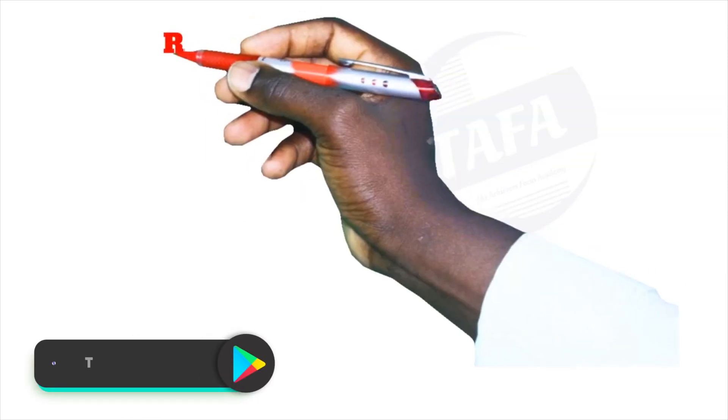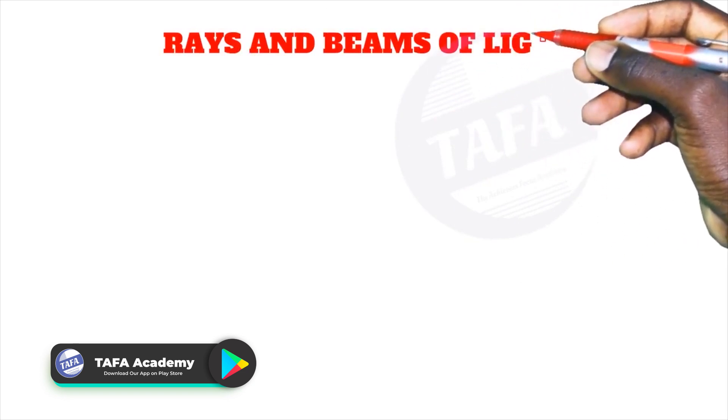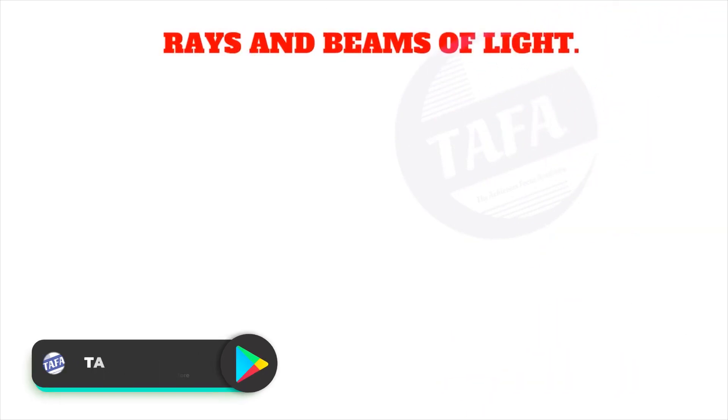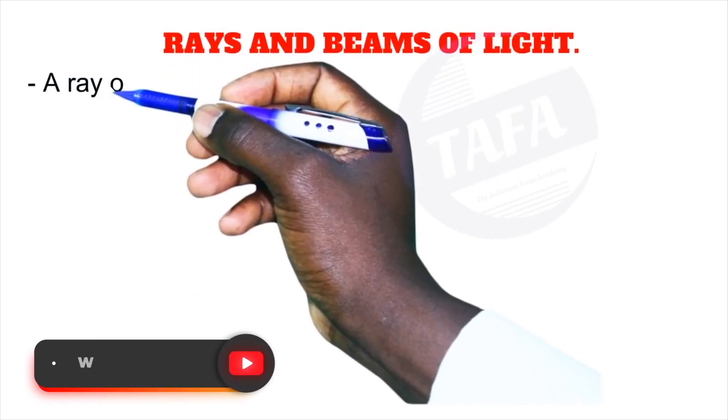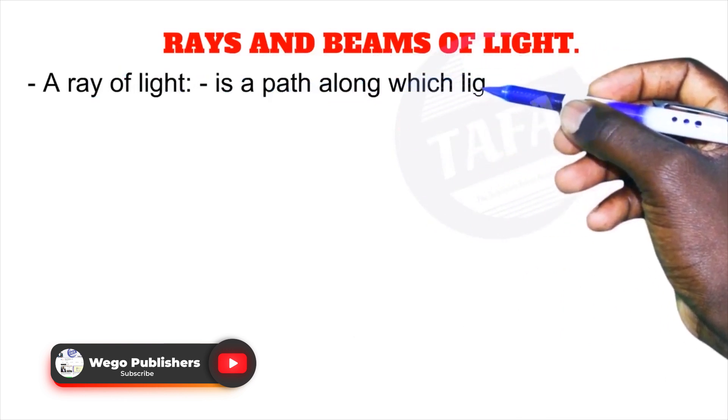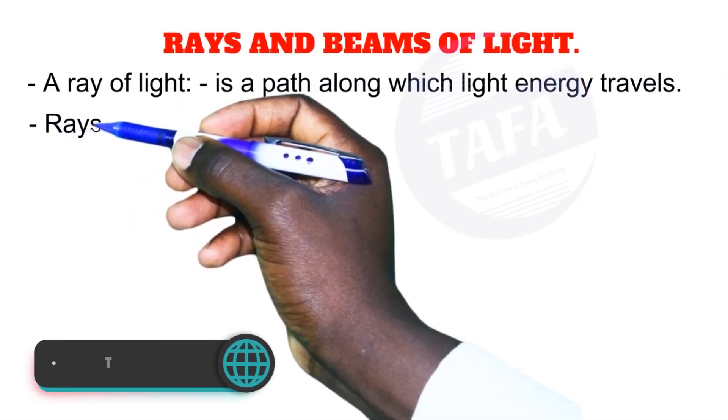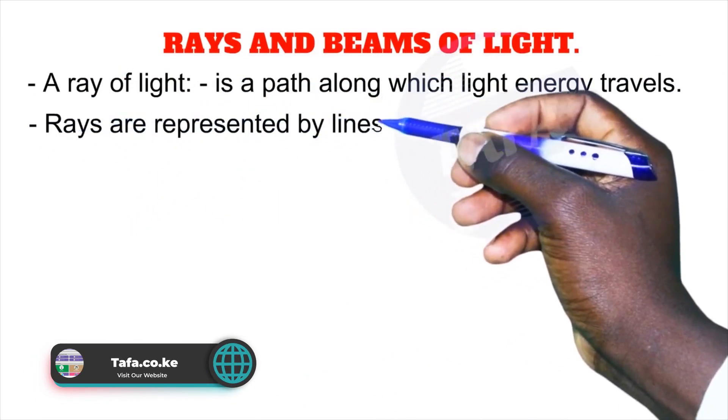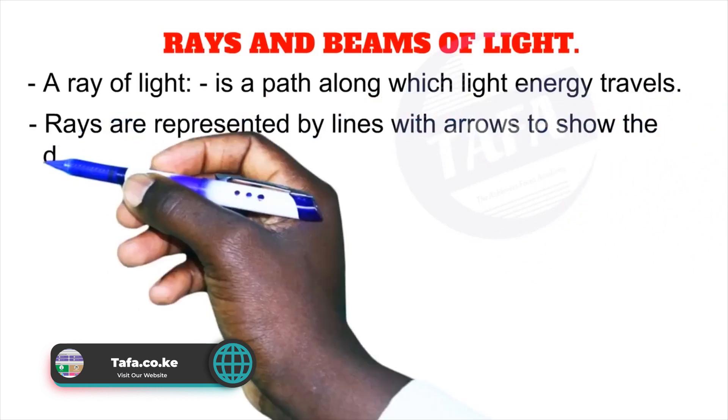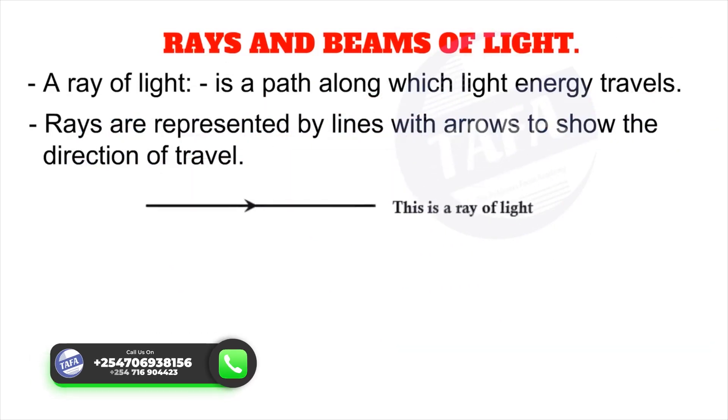Next we want to look at rays and beams of light. A ray of light is a path along which light energy travels. Rays are represented by lines with arrows to show the direction of travel, as shown in this diagram. So this is a ray of light.